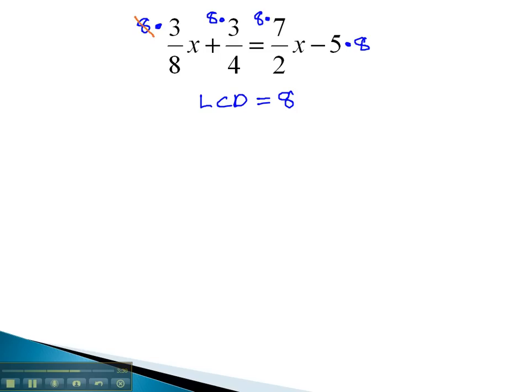When we go back to reduce, 8 over 8 is 1 times 3x is 3x. 8 over 4 is 2 times 3 is 6, equals 8 over 2 is 4 times 7 is 28x, minus 8 times 5 is 40. And now we have our equation with no fractions to solve.